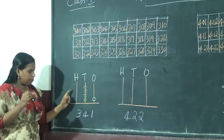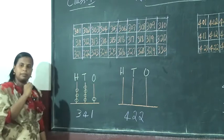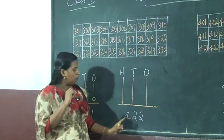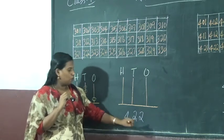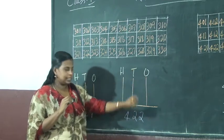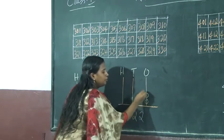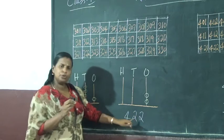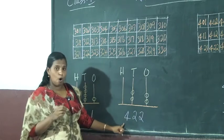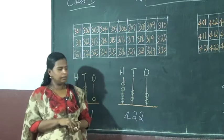The next number 422. 1 place, tens place, 100 place. 1, 2. 10 in the place 2, 1, 2. 100 in the place 4, 1, 2, 3, 4. This is very easy.